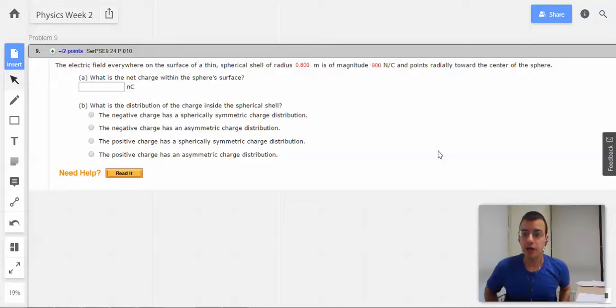Problem 9. The electric field everywhere on the surface of a thin spherical shell of radius 0.8 meters is of magnitude 900 newtons per coulomb. It points radially towards the center of the sphere. What is the net charge within the sphere's surface?